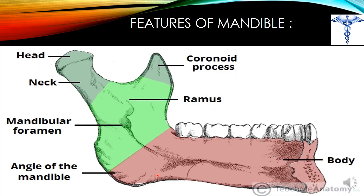Here you can see highlighted in pink is the body of the mandible, and in green is the ramus. The two processes above the ramus are the coronoid, which is the anterior process, and the posterior process called the condyloid process. The condyloid process attaches to the skull to form the temporomandibular joint, and it has two parts: the head and the neck. The condyloid process and the coronoid process are separated by the mandibular notch. The ramus and the body meet at an angle called the angle of the mandible.